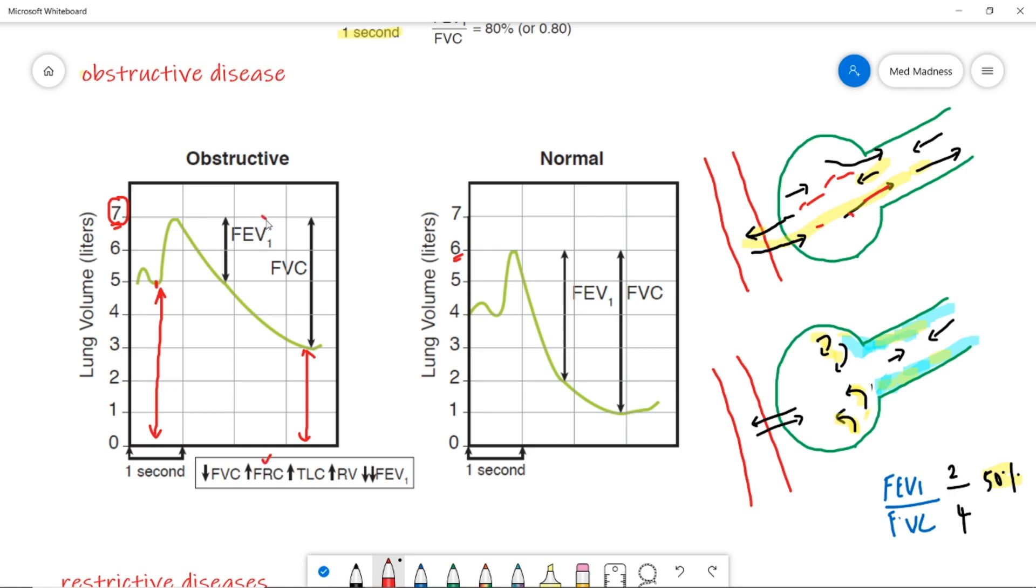When you talk about the FEV1 and FVC, FEV1 is decreased because of obstruction. Air moves out very slow and FVC is also decreased because there is a big air trap. So, when you compare both FEV1 and FVC, FEV1 is about 2 liters here. FVC is about 4 liters here.